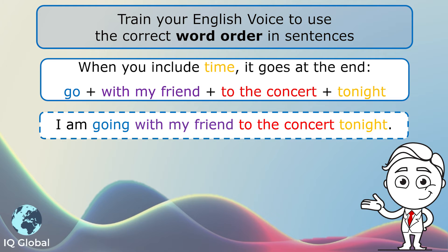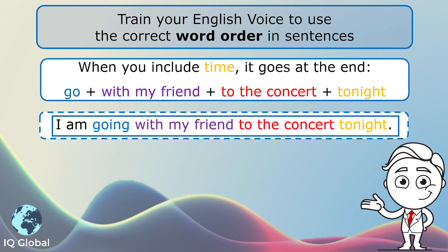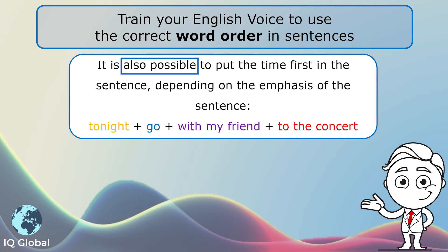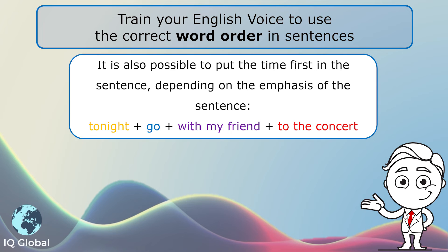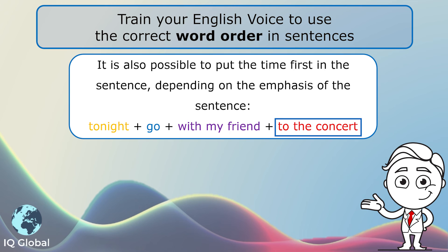We could also say: 'I am going with my friend to the concert tonight.' It is also possible to put the time first in the sentence, depending on the emphasis. Have a look at the example — 'tonight' is first, followed by the verb 'go,' then the object 'with my friend,' and then the place 'to the concert.'